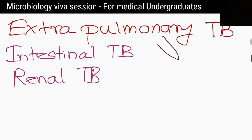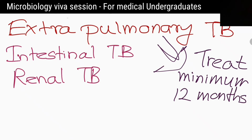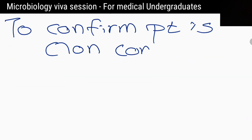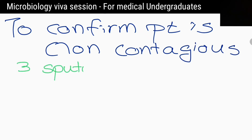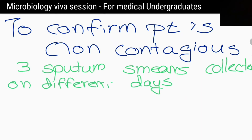How long should we treat patients with extrapulmonary tuberculosis? At least for 12 months. How do you confirm the patient is non-contagious after the treatment? When 3 sputum smears collected on different days become negative, we can say that patient is non-contagious.